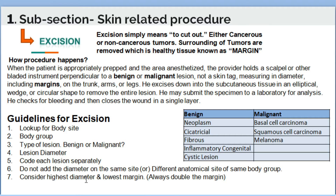Consider the highest diameter and the lowest margin. In the excision report, the physician will mention the diameter and the margin. For example, if the diameter is 5 x 6 cm, take the highest number — 6 cm. If the margin is 1 x 2 cm, take the lowest — 1 cm — and double it: 1 + 1 = 2. Then add that to the highest diameter: 6 + 2 = 8 cm. Assign the code for 8 cm.